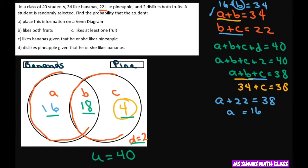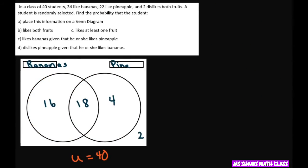Now let's fill out the probabilities. So here we have our information and we want to know, they both like fruits. So the probability of B and P, that's going to be this part in here. So that's going to be 18 out of your total, which is 40. And that reduces to 9 divided by 20.